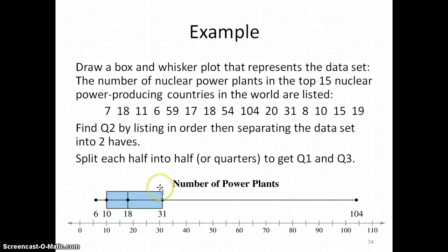Then repeat that with the upper part. Again, not including the median as one of your observations. There should be seven, and you count to the middle of those seven, and you'll find 31.